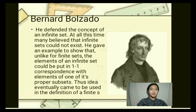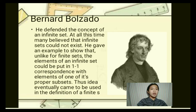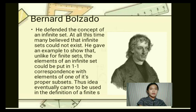Bernard Bolzano, a philosopher and mathematician of great depth of thought, in 1847 conceived of sets with the definition of an embodiment of the idea or concept which we conceive when we regard the arrangement of its parts as a matter of indifference. He defended the concept of an infinite set; at this time, many believed that infinite sets could not exist. He gave an example to show that, unlike finite sets, the elements of an infinite set could be put in one-to-one correspondence with elements of one of its proper subsets. This idea eventually came to be used in the definition of a finite set.